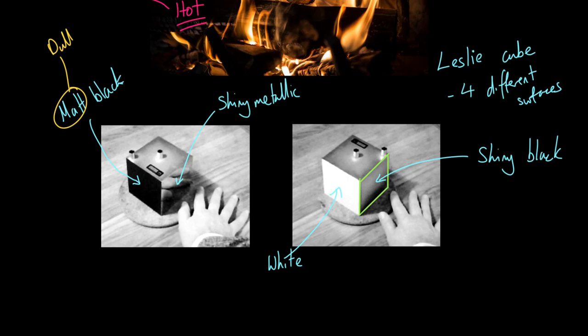So we've got four surfaces: matte black, shiny metallic, white, and shiny black. And what you are going to do, or maybe what you have done, is you are going to look at the emission of infrared radiation from these different surfaces. So how do you use this equipment? Well, it's really rather straightforward. You get a kettle, you boil it up, and then you put some hot water in the top.